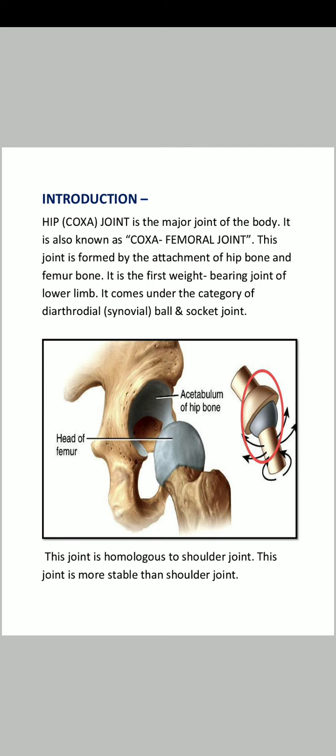Within synovial joints there is a sub-category called ball and socket joint, where one structure is ball-shaped and the other is socket-shaped. As you can see in the diagram, the acetabulum of the hip bone is concave like a socket, and the head of the femur is convex and protrudes outward.